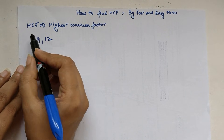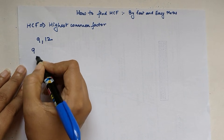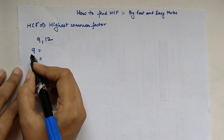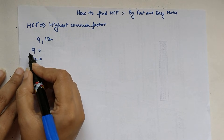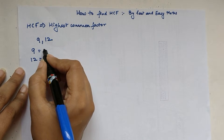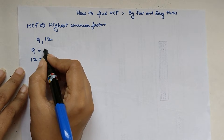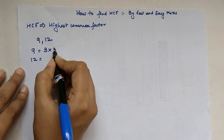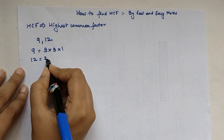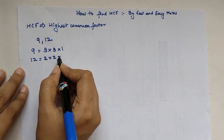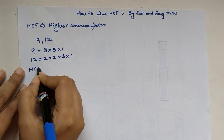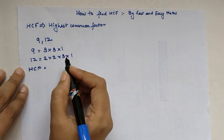The traditional method of finding the HCF is to write down the factors of 9 and the factors of 12. While writing these factors, you have to always ensure that the numbers are represented in terms of prime numbers. So 9 can be written as 3 × 3 × 1, and 12 can be written as 2 × 2 × 3 × 1.